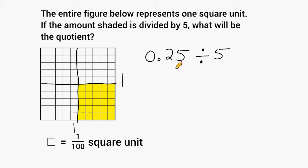that is the same thing as 5 nickels. So if you took 25 cents and you divided it into 5 equal groups, that would give us exactly 5 cents, which is the same thing as 5 hundredths.